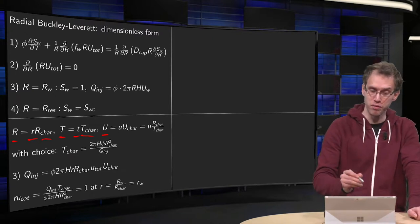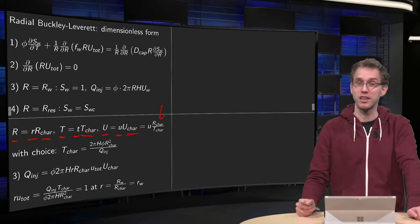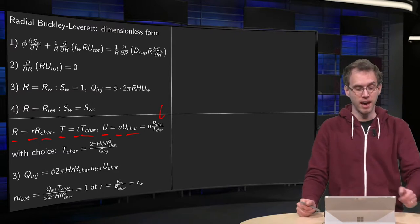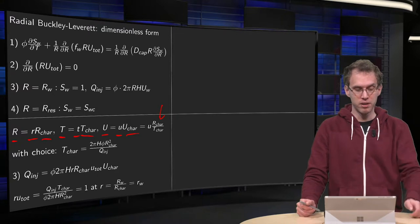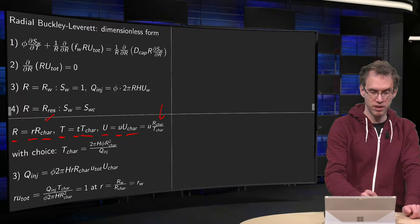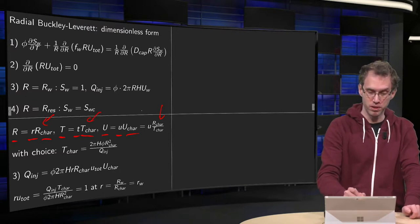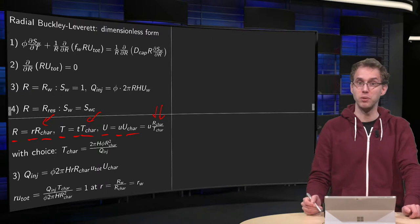And your characteristic is R-characteristic divided by T-characteristic. And then you plug everywhere where you have a capital R, you plug this in. Where you have a capital T, you plug this in. And where you have a capital U, you plug this in.